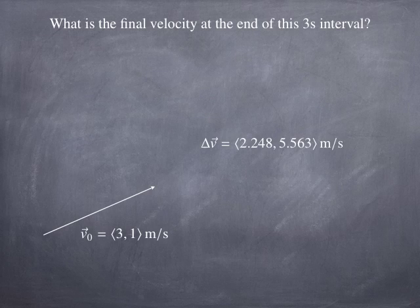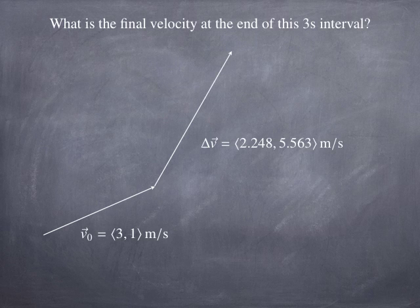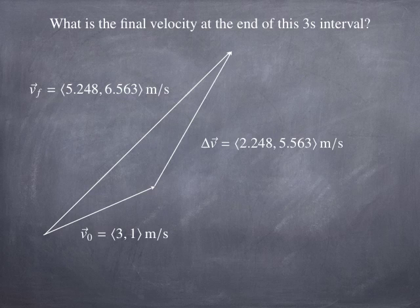So now we're going to calculate the final velocity at the end of the 3 second interval. How are we going to do that? Well, we just need to add the change in the velocity vector to the initial velocity vector to get the final velocity vector. That's all there is to it.